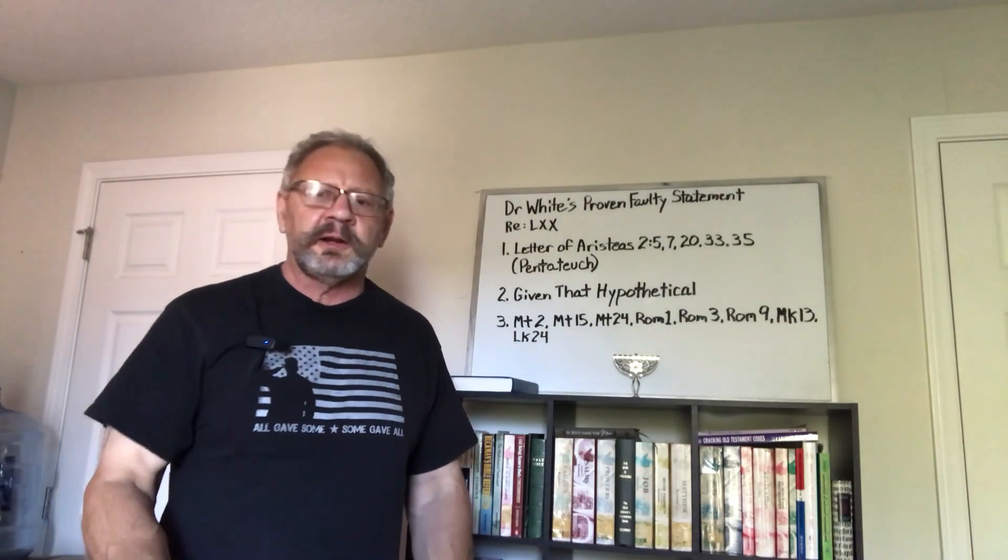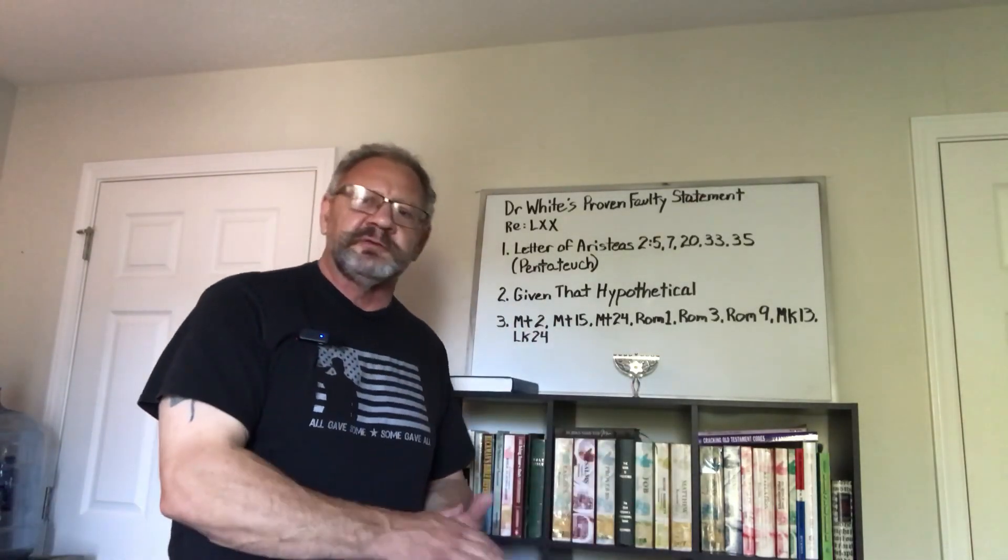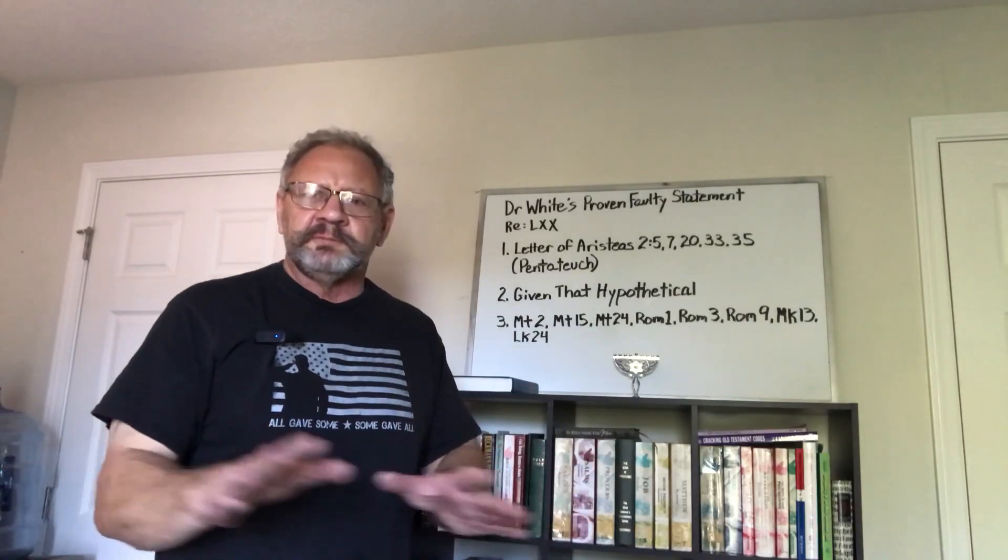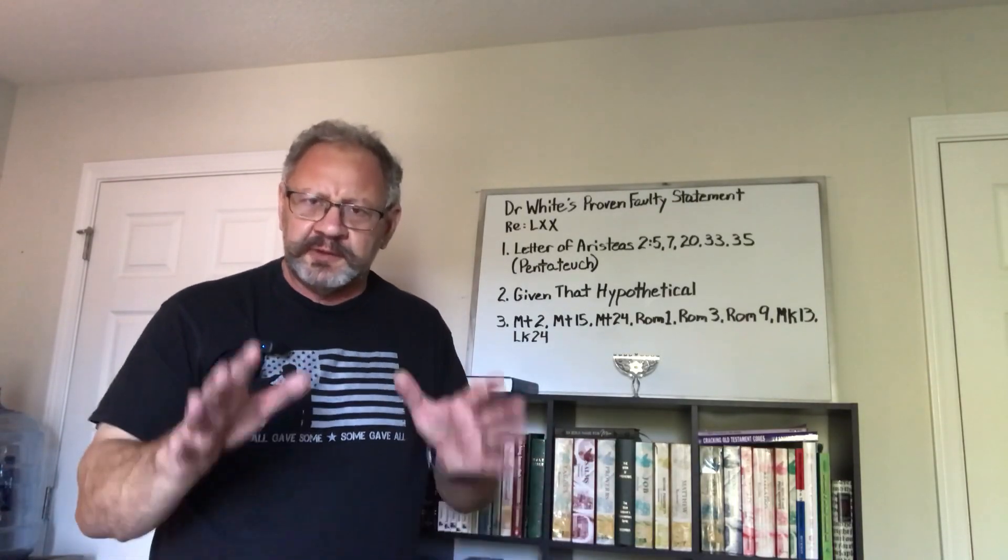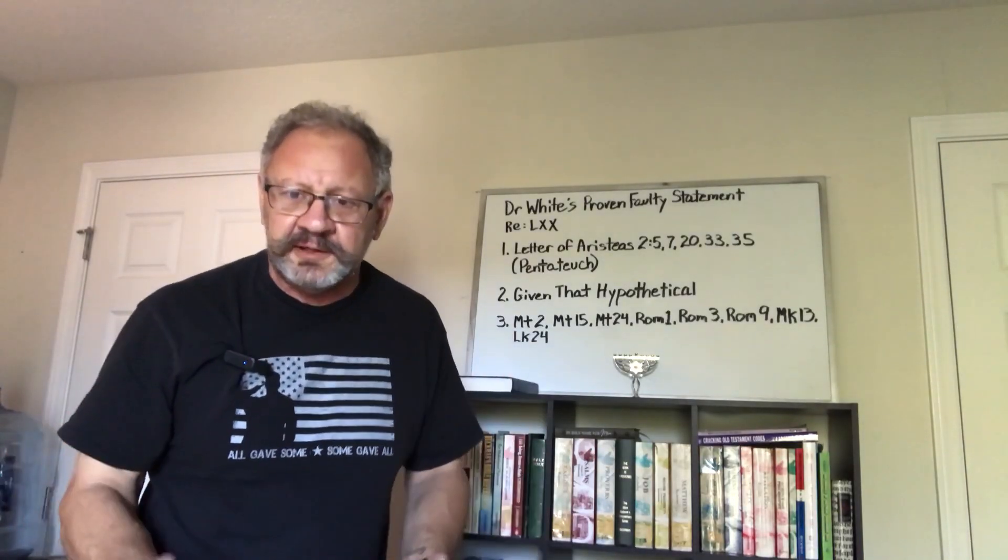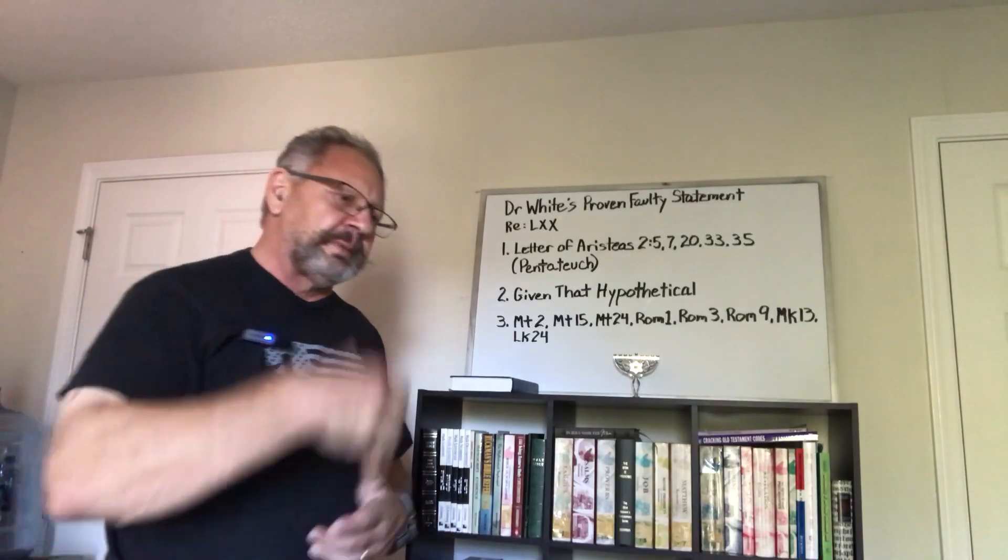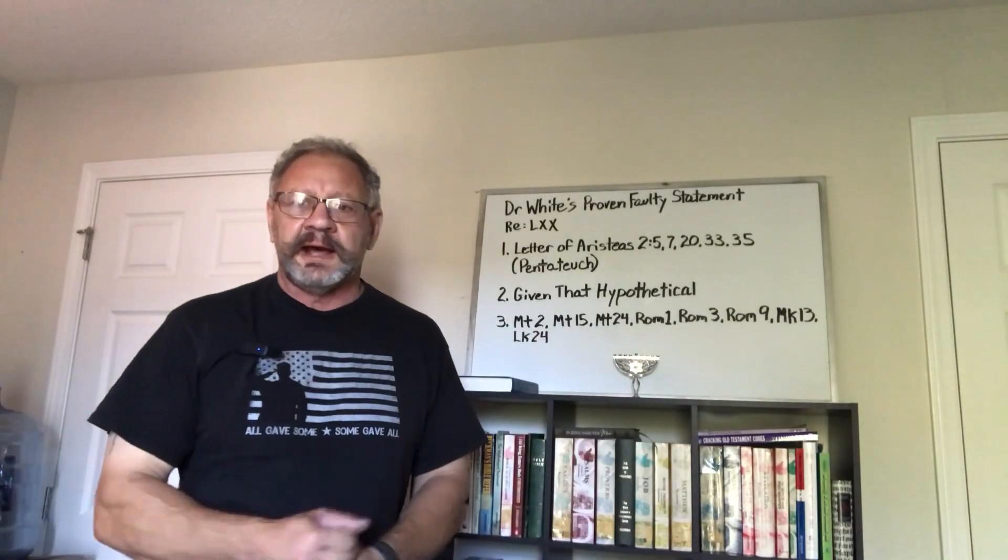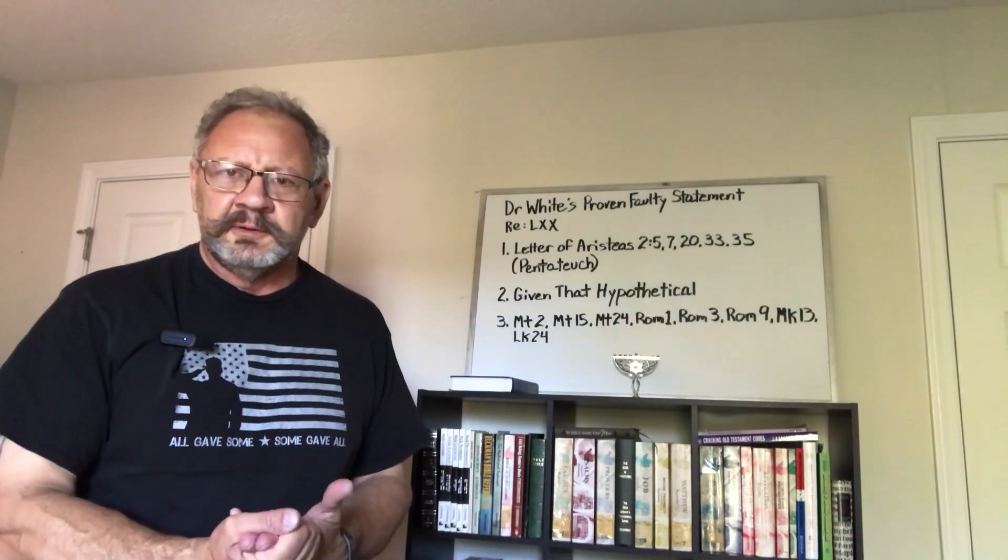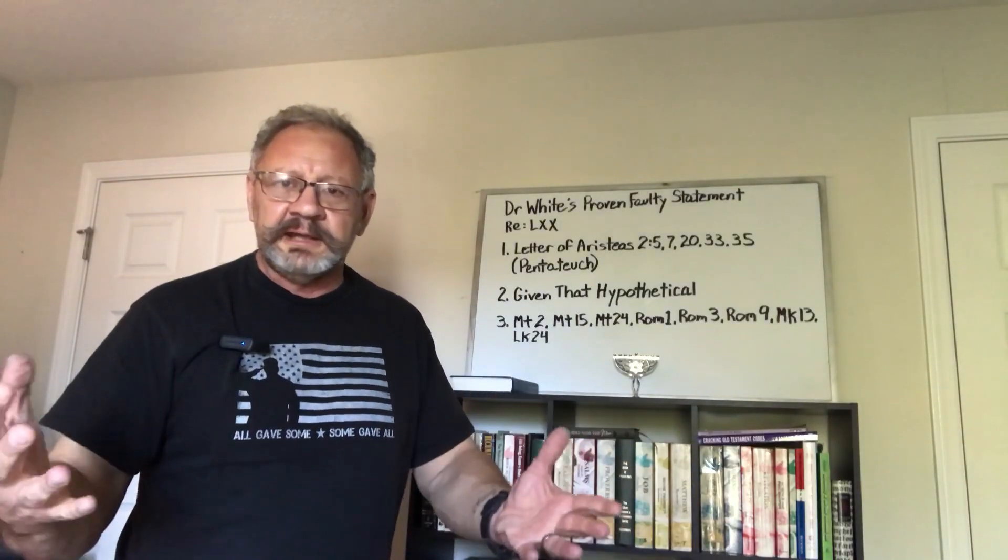The same thing is true with Mark chapter 13, when Mark writes and inscribes what Jesus talks about, the abomination of desolation in Daniel chapter 8 to chapter 9. Yeshua could not possibly have been talking about or quoting from a Septuagint because the Septuagint is only a translation of the Pentateuch according to the Letter of Aristeas, according to their foundational document itself. Luke chapter 24, when Jesus expounds to his disciples after his resurrection out of the Torah, the Nevi'im, and the Ketuvim—the Law, the Prophets, and the Writings—well every time he expounded to his disciples out of the Prophets and the Writings, he couldn't have been expounding out of a Greek Septuagint. It simply could not be possible.